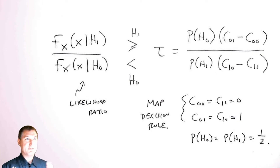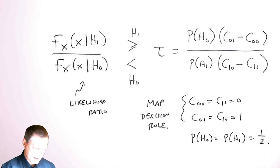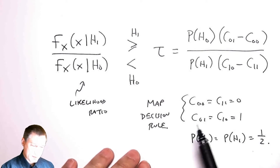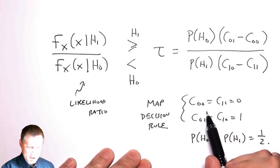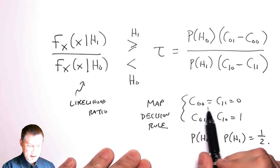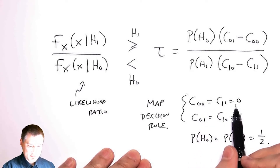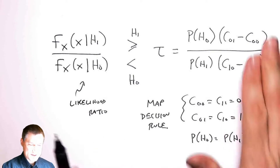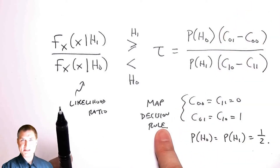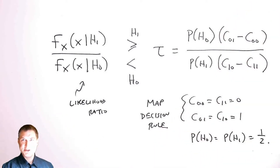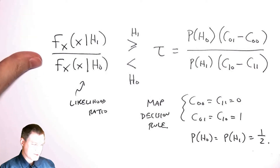I want to do a worked example of simple hypothesis testing from last time. This is kind of where I ended up in the last lesson. When I have these standard costs — zero for equal cases and one for unequal ones — this decision rule is called the MAP, or Maximum A Posteriori Decision Rule, which we talked about in a previous lesson.